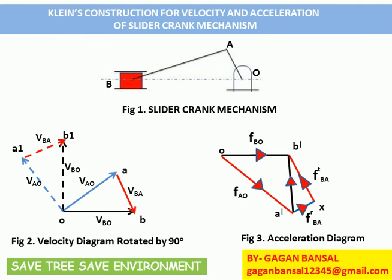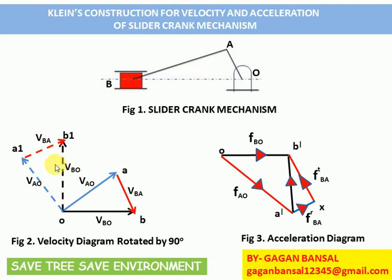In the last few lectures we determined how to generate the velocity diagram using a graphical approach for a slider crank mechanism. We got the velocity diagram as OAB, where vector OA represents the velocity of A with respect to O, and vector AB represents the velocity of B with respect to A. In figure 2 we have rotated the velocity diagram by 90 degrees — this was done intentionally, as I will explain. This is also the acceleration diagram obtained using the graphical approach. Now we will make the velocity and acceleration diagram using Klein's construction.